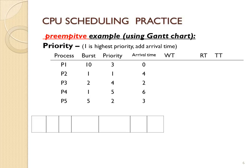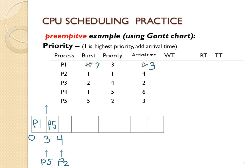Moving on — this time we're going to do a preemptive example. In this case the processes arrive at staggered times, so we need to take that into consideration, but priority one is still the highest. At time zero we have P1, but because P1 is priority three, if a priority two or priority one process arrives P1 will be preempted. At time three, P5 arrives with priority two, which is higher than P1, so P1 is preempted with seven time units of CPU burst left and a new arrival time of three. P5 will go, but since P5 has priority two it may be preempted by a priority one — and P2 arrives at time four, so P5 is preempted with four units of CPU burst left and a new arrival time of four. Now P2 will go.